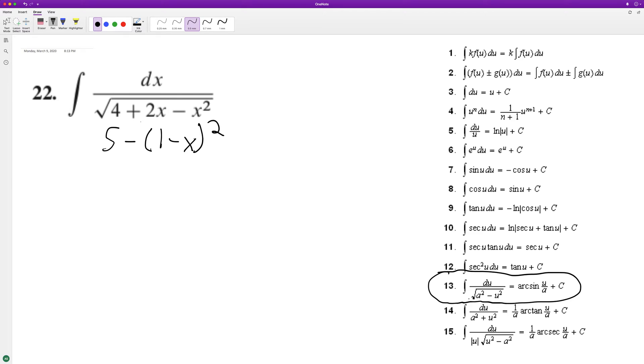Okay, so now we can use u-substitution. We'll set u equal to one minus x, and du is equal to negative one. So we need to multiply by a negative on the outside here.